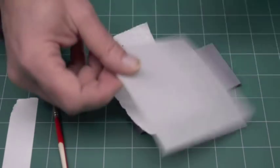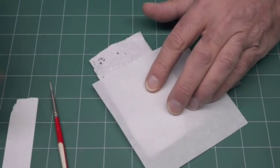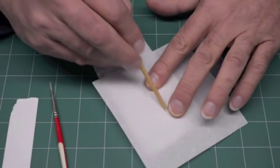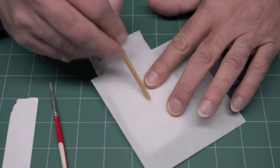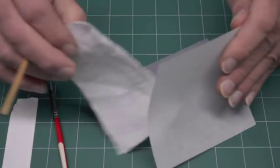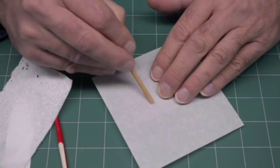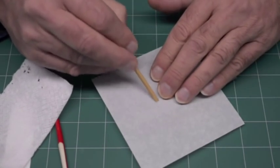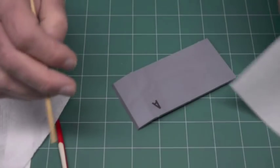Then you take your backing paper and burnish over it. This will squeeze any remaining water out from underneath the dry transfer. Then you take your backing paper and burnish over it some more, and that's all there is to it.